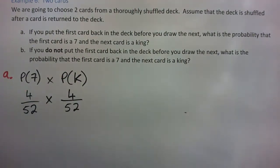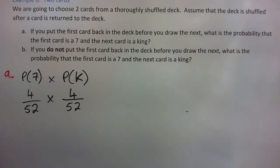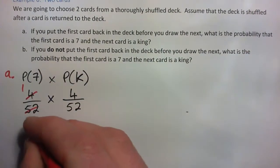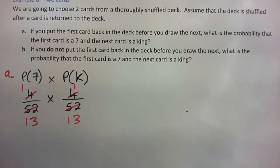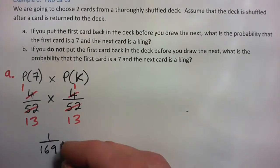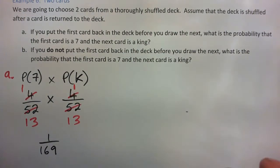We can multiply if we want to know the probability of getting the 7 and then the king — two events one after the other, which makes it all the more less likely. These events are independent. So 4 into 4 goes once, 4 into 52 goes 13 times. We have 1 times 1 over 13 times 13, which is 1 over 169. So 1 over 169 is the probability for Part A.